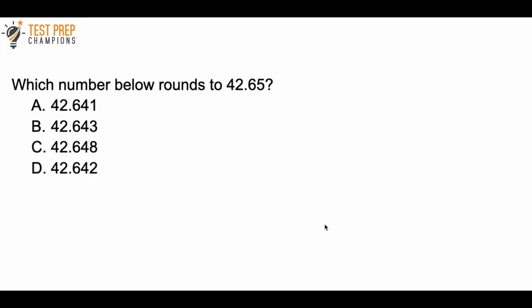Which number below rounds to 42.65? Is the answer A, B, C, or D? Now's your chance if you'd like to pause the video, try to figure this out, take all the time you need, and whenever you're ready, we'll go over the answer. So let me pull out answer choice A here so we can do a quick review of place values. The 6 here is in the tenths place, the 4 is in the hundredths place, and the 1 is in the thousandths place.